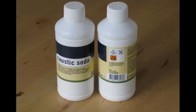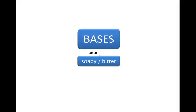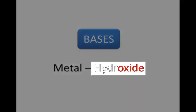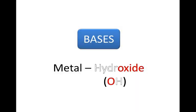For example, drain cleaner is a very, very strong base — sodium hydroxide. Why are these bases bitter, and why do they behave as they do? It's because they all have the same kind of structure: they start with a metal and they end with hydroxide, OH. So bases can also be called metal hydroxides.